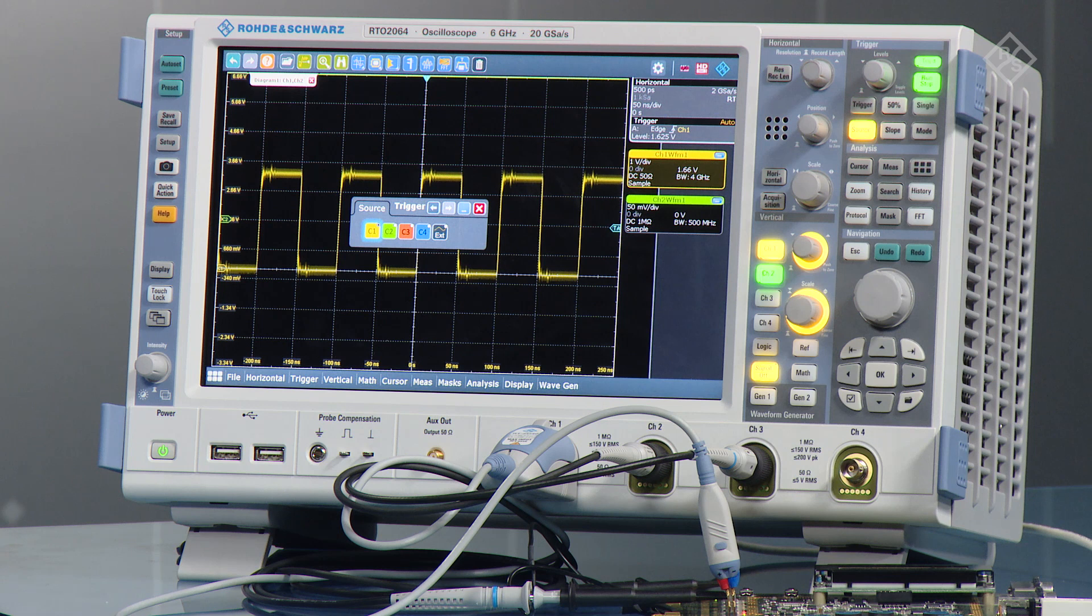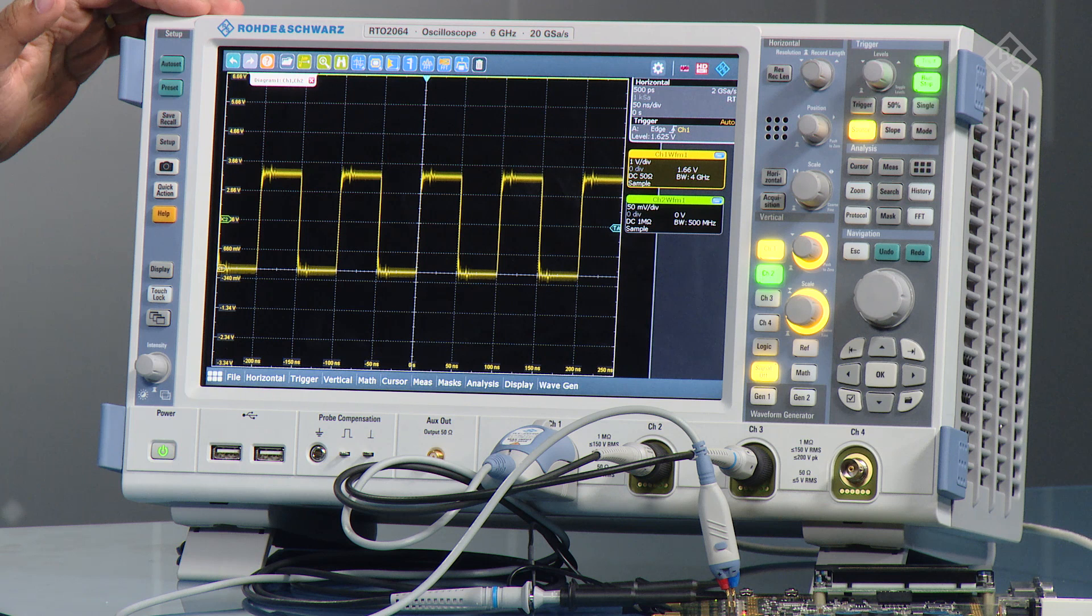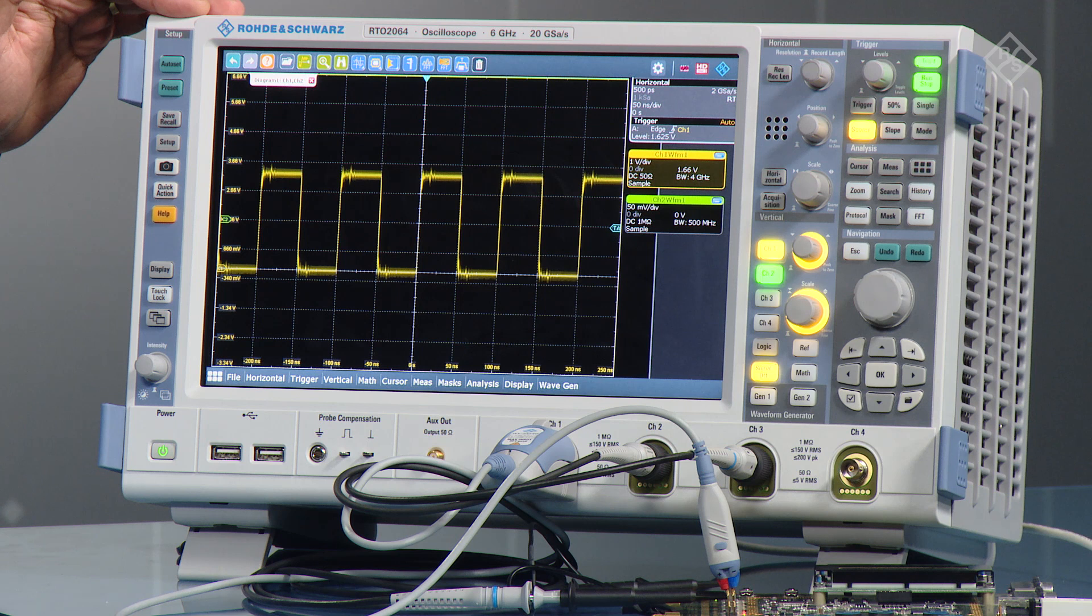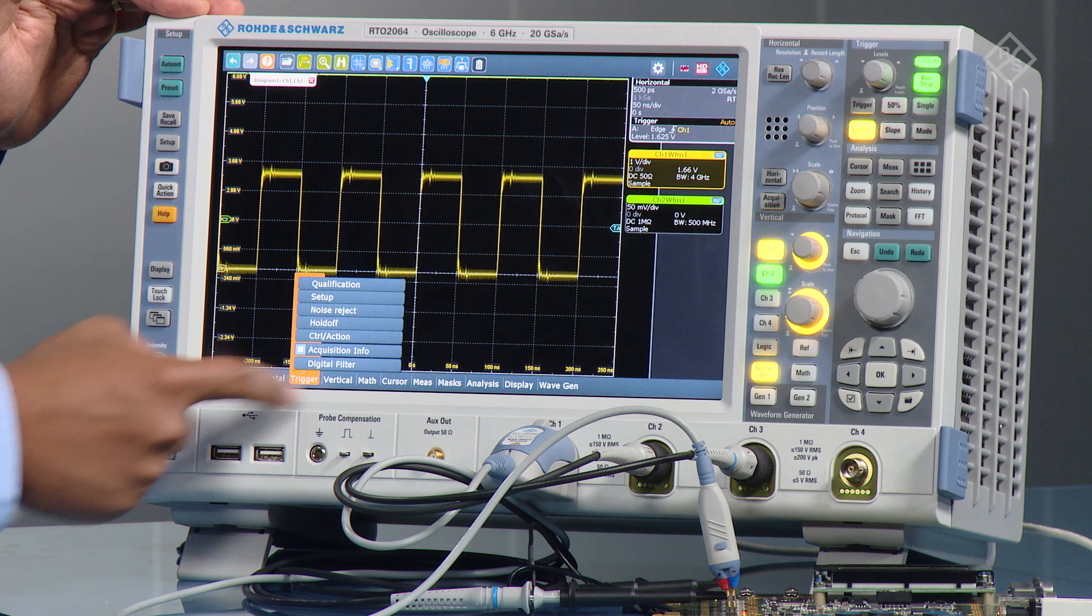On the front panel of the instrument you have the nice big screen here. You have the signal bar down at the side which gives you all the important information about the scope and what the settings are. Down at the bottom you have the full menu located as well.